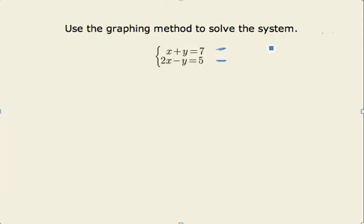In order to more easily graph these things, why don't we rewrite them in the form y equals something? So on this first one, if we just go ahead and subtract x from both sides, we'll have y equals 7 minus x.